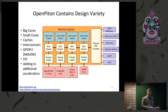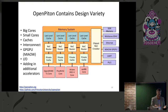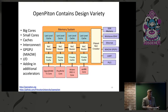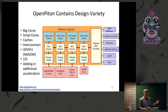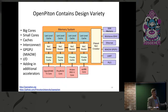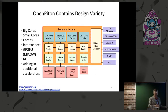We see OpenPiton and OpenPiton plus Ariane as a mechanism to provide real designs that people have actually taped out, which can scale to large design points going through large chip flows and open source chip flows. What makes a good benchmark for open source EDA chip CAD flows? First, you want a lot of different design variety — and we provide that. We have big cores, small cores, caches, interconnect, a GPGPU, different I/O, and now different accelerators added into the design mix, so you can build complex SoCs.